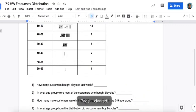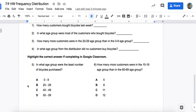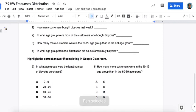Let's scroll down to question 5. In which age group were the least number of bicycles purchased? Well, there were no bicycles purchased by people 50 to 59, so that would be the least.